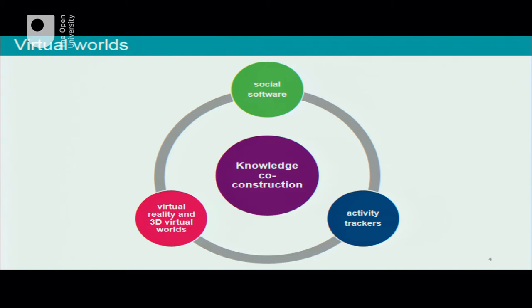Today I'll focus on three technologies: social software — technologies such as blogs, wikis, and micro-blogging tools such as Twitter; activity trackers, including smart watches; and virtual reality and 3D virtual worlds. In all three technologies there are two underlying themes. First, these technologies enable social connections and directly influence our physical, mental, and psychological wellbeing. Second, we will look at how these technologies support learning and knowledge construction, collectively and individually.